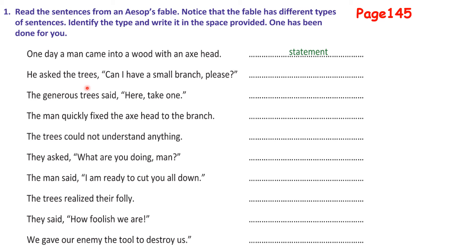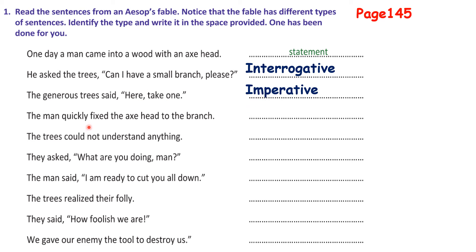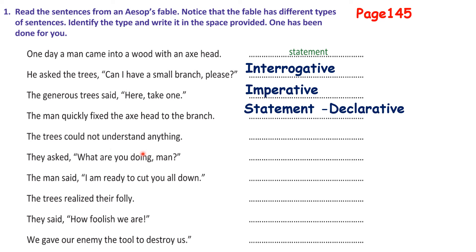Next: 'He asked the trees, can I have a small branch please?' — there is a question mark, so of course it is interrogative. 'The generous tree said, here, take one' — this is an order, so it is imperative. 'The man quickly fixed the axe head to the branch' — that is a statement, so declarative. 'The trees could not understand anything' — also just information, so declarative.